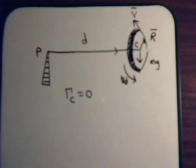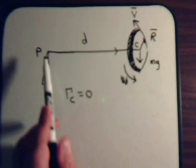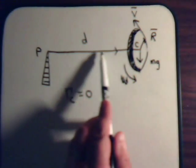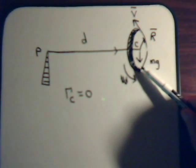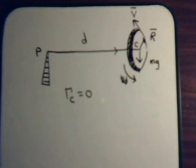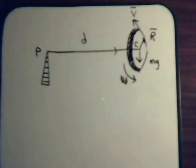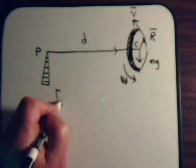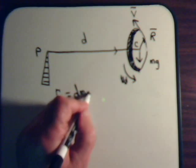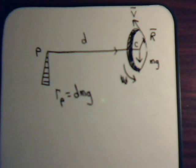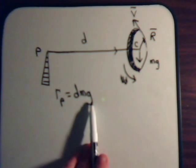What about with respect to point P? The position vector is the pivot arm of length D, cross Mg. These are perpendicular, so with respect to point P, the torque is Dmg. And it's a constant — D is a constant, M is a constant, and g is a constant.